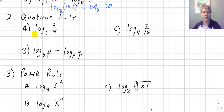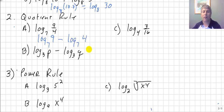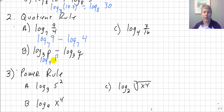Let's look at our quotient rule. Log base 7 of 9 divided by 4 — we have a power divided by a power, so we subtract our logarithms: log base 7 of 9 minus log base 7 of 4. Going the other direction: log base 3 of P minus log base 3 of Q equals log base 3 of P divided by Q.